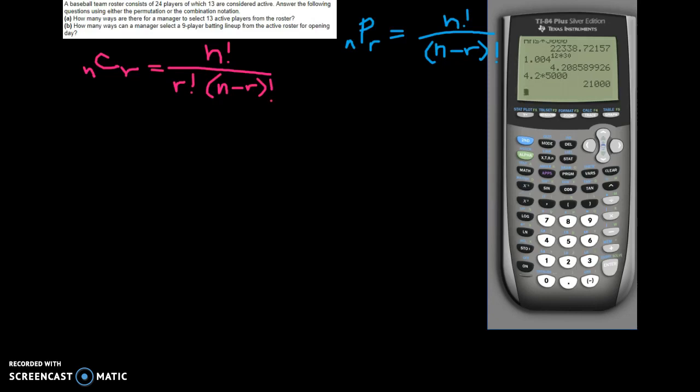So when I'm reading this question about a baseball team, there's 24 players and 13 of them are considered active. And then it says, how many ways are there for the manager to select 13 active players from the lineup? So if you're on the lineup, you're on the lineup, right? So it doesn't matter what order you pick the 13 in, it would still be the same 13 people no matter what you do.